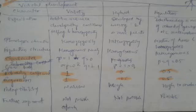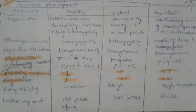Gene frequency fourth character hai. Variety mein gene frequency either one ya zero — matlab agar hum allele frequency ki baat karte hain, toh P either one hoga toh Q zero hoga, ya P zero hoga toh Q one hoga. Similarly hybrid mein gene frequency one ke near hota hai, means it varies from zero to one. Population mein yeh hamesha constant rehta hai — 0.5 — because of the buffering nature of population, kyunki yahan hamesha open pollination hote rehta hai, toh population ka buffering capacity zyada hota hai.